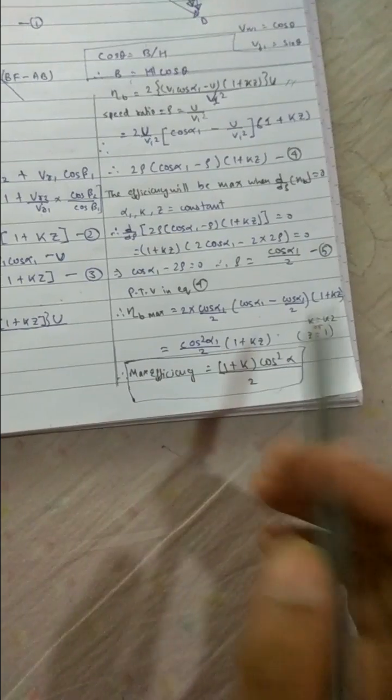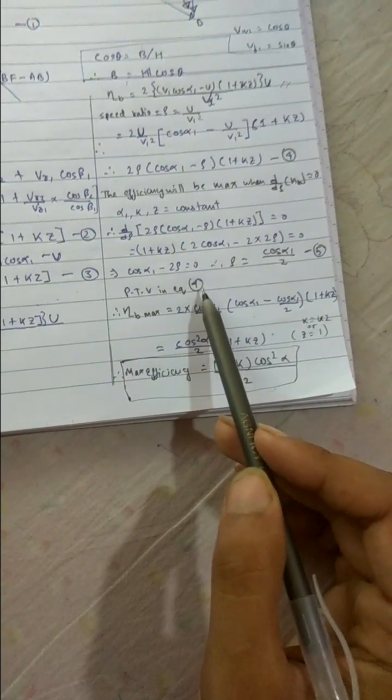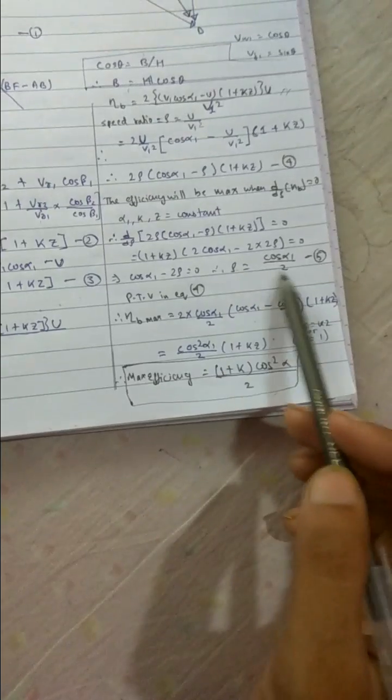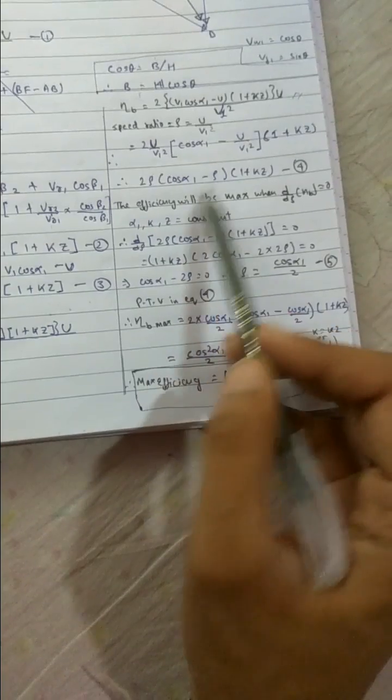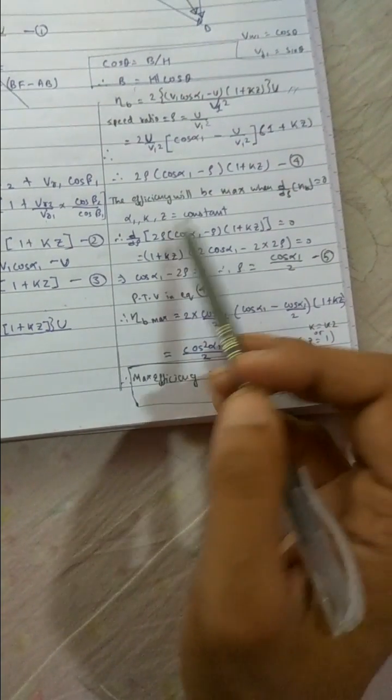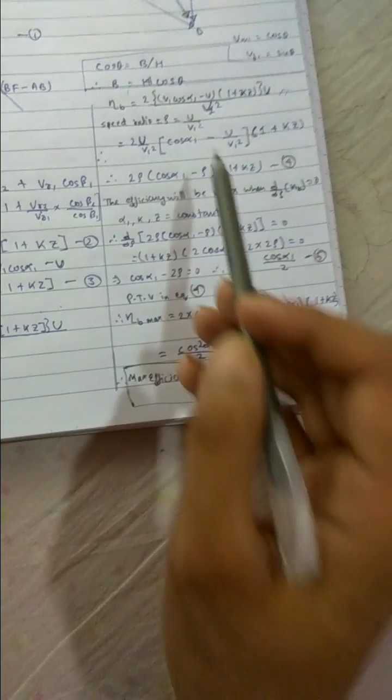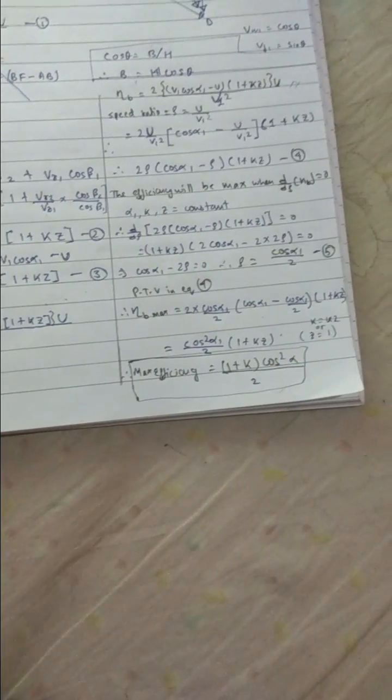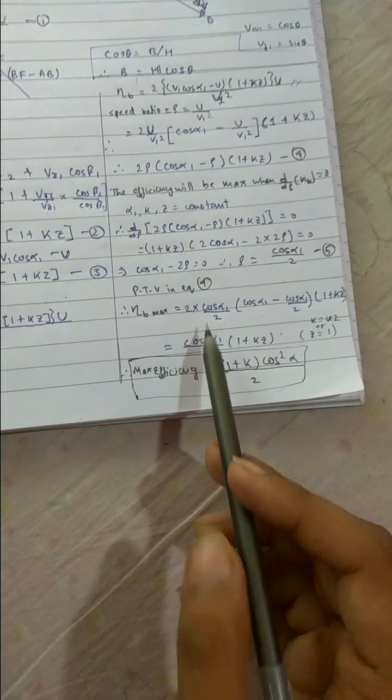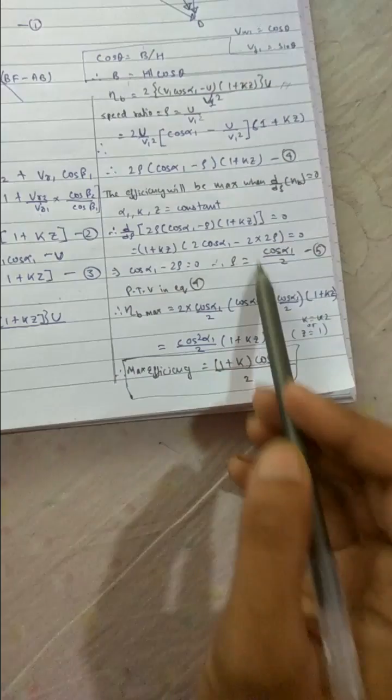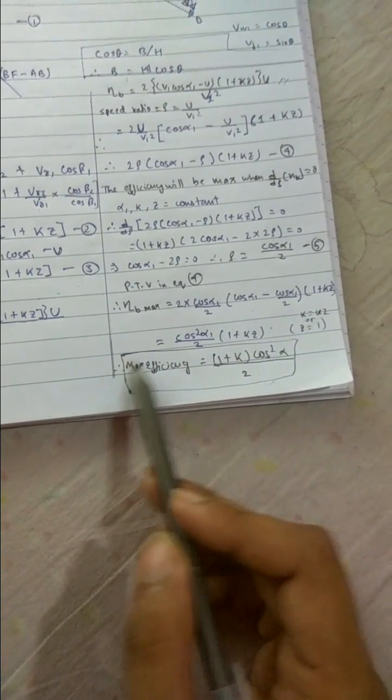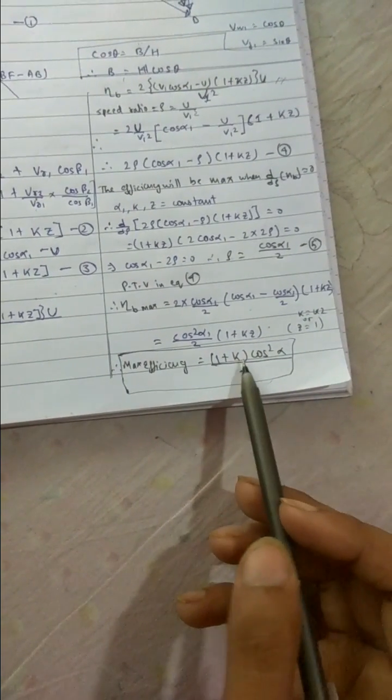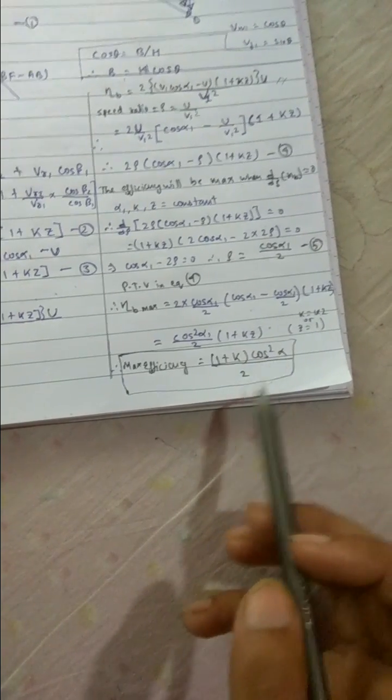We got the value of VW1 plus VW2. So now if we put this value of equation, this value of rho, this value of rho in equation 4. See here we wrote this term in the term of rho. So if we put this value which we got from the differentiation, we get the maximum efficiency. So eta b max equals to, putting the value 2 into rho, rho value is this, putting the equation, putting the value in equation, we get the maximum efficiency 1 plus K cos square alpha 1 by 2. Thank you.